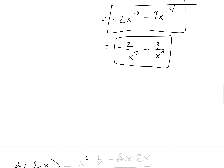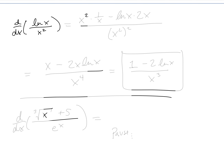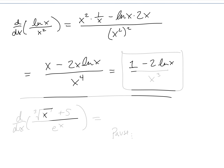Last example: the derivative with respect to x of ln(x)/x^2. Using the quotient rule: low (x^2), d high (derivative of ln(x) is 1/x), minus high (ln(x)), d low (derivative of x^2 is 2x), all over x^4. We get x^2 · (1/x) = x, minus 2x·ln(x), over x^4. Canceling an x, that simplifies to (1 − 2·ln(x))/x^3. That is our derivative.